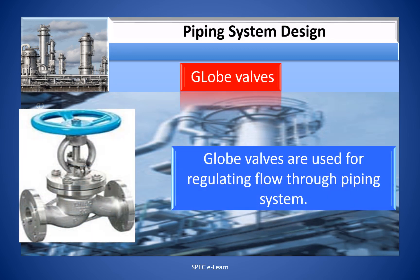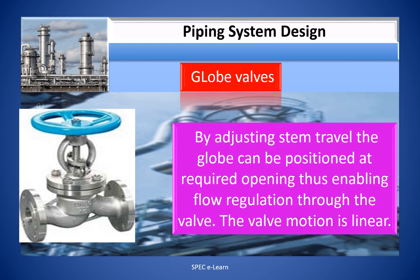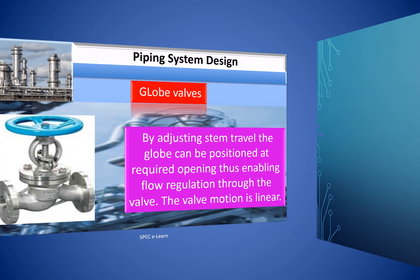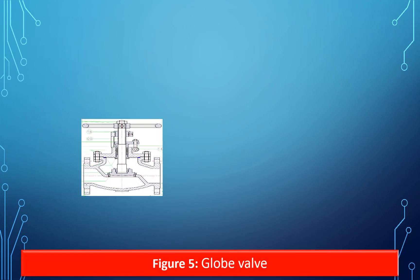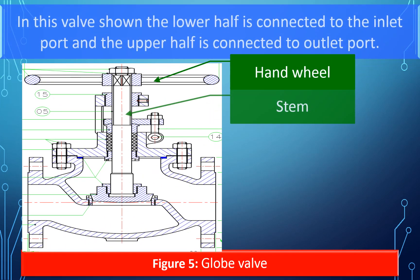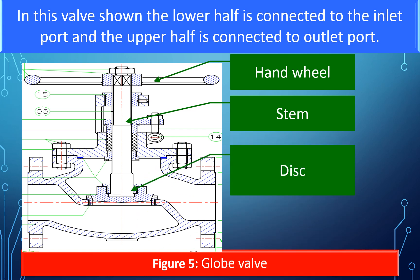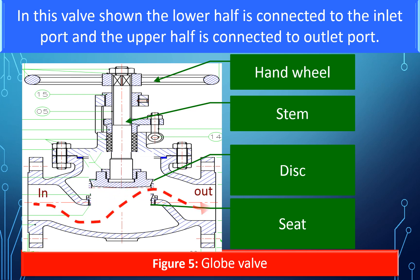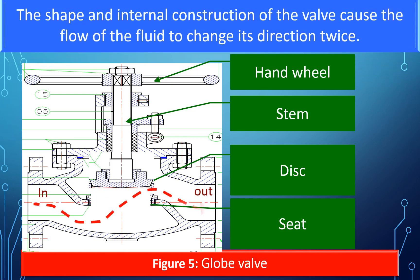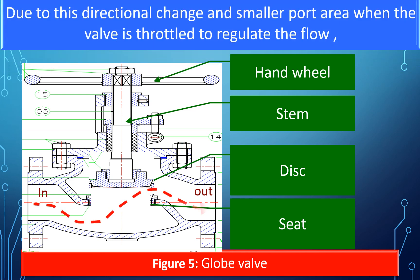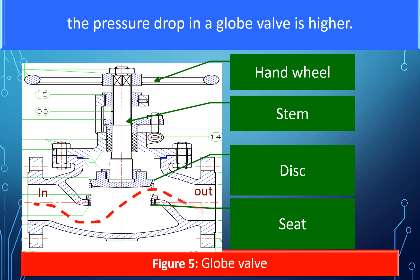Globe valves are used for regulating the flow through the piping system. By adjusting the stem travel, the globe valve can be positioned at a required opening, thus enabling flow regulation. The valve motion is linear. The internal construction of the valve causes the flow of fluid to change its direction twice. Due to this directional change and smaller port area, when the valve is throttled to regulate the flow, the pressure drop in a globe valve is higher.